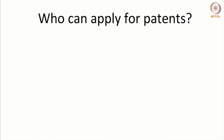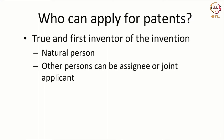Who can apply for patents? The inventor is the person who creates the invention and is entitled to apply for a patent. The act uses the words 'true and first inventor.' This can be a natural person — an individual, a group, or a team of people working from different locations — and they are all shown together as the inventors, with their names figuring in the patent application.